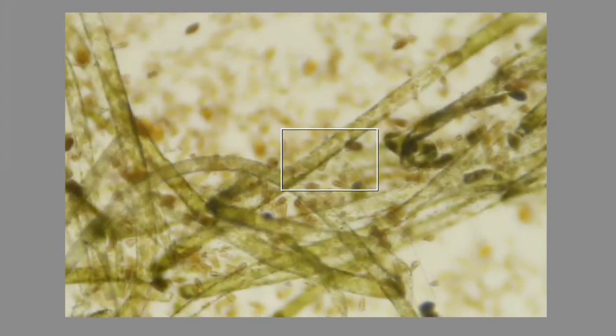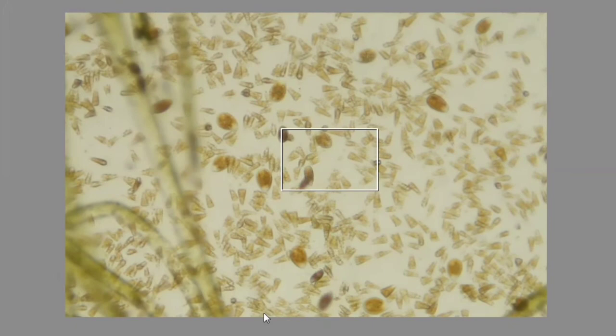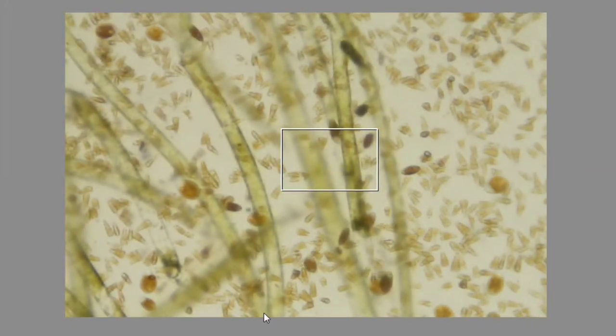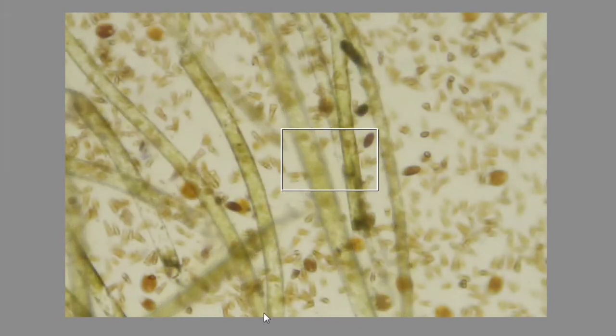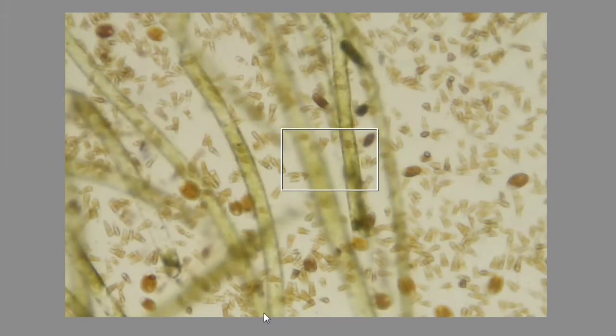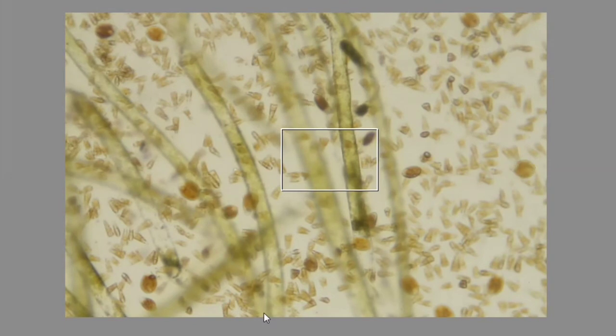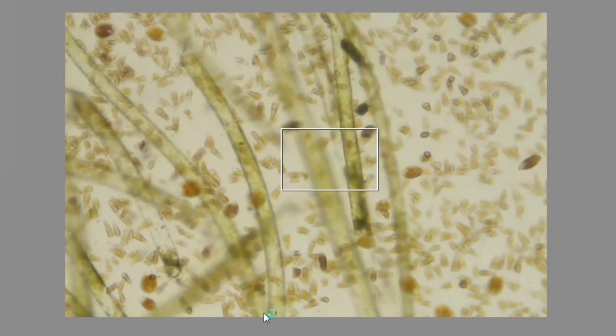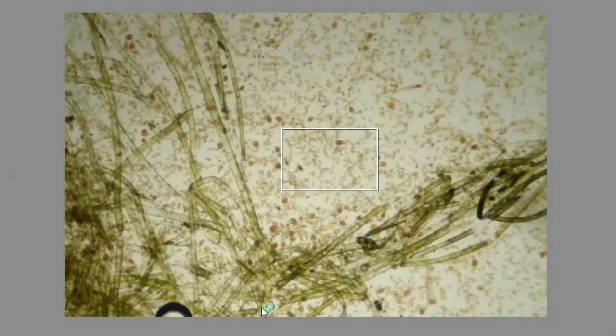And I believe that the little triangle shape things that we see here as we get closer and closer are a type of diatom. But once again, I'm not a scientist. I'm just a dude with a microscope, a reef tank and a YouTube channel. So if you know what any of this stuff is, please drop me a comment. Let me know.